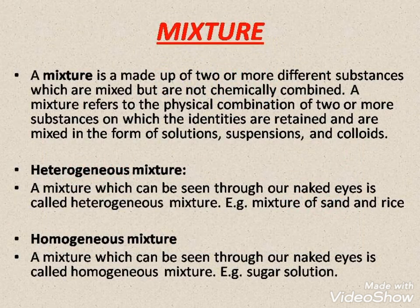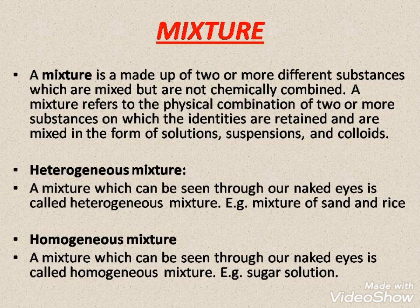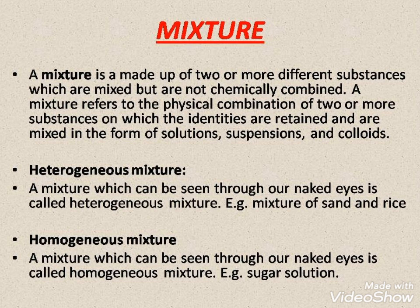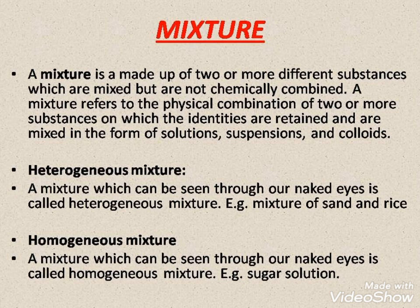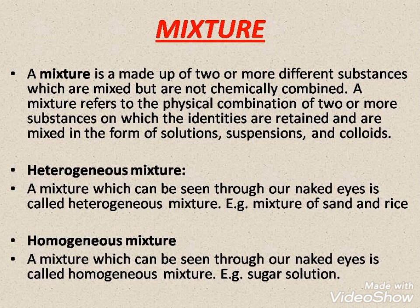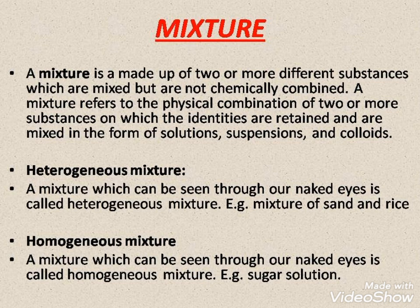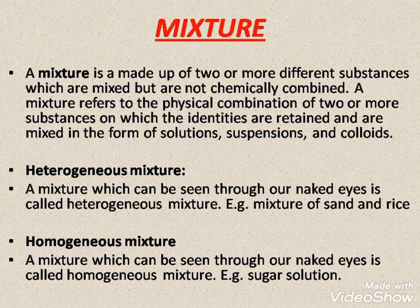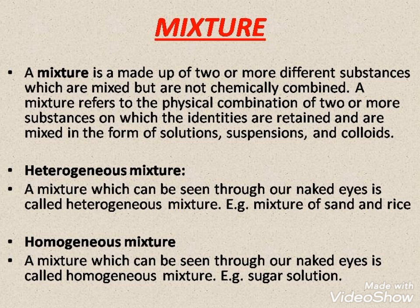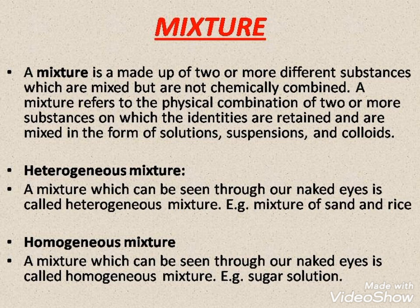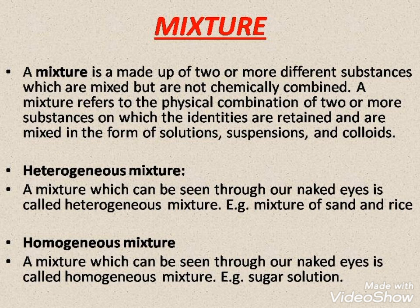Now let us discuss about mixtures. Matter can be classified in various different ways. A mixture is made up of two or more different substances which are mixed but not chemically combined with each other — they are in physical combination with each other, with no chemical bonding or reactivity between the components. Thus, they can be separated by simple physical means. The mixture can be classified into two important categories: heterogeneous mixture and homogeneous mixture.